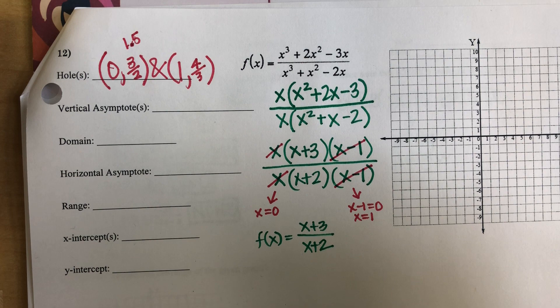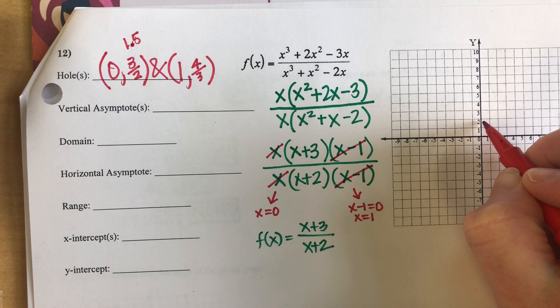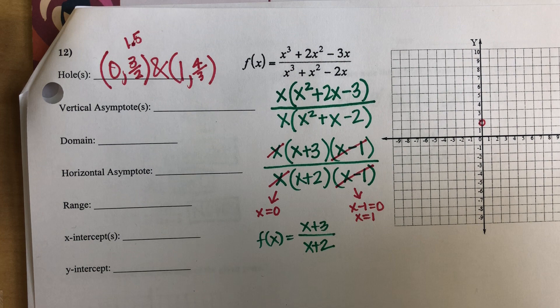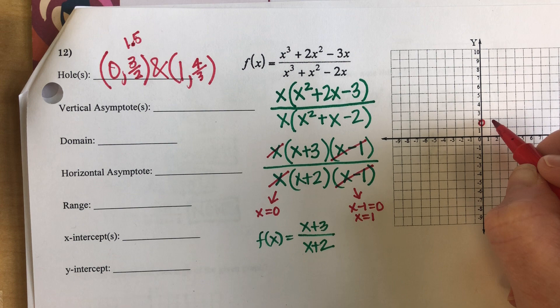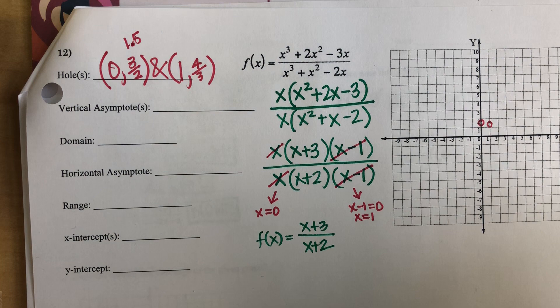I can come plot both of those over here on my coordinate plane. Zero, 1.5 — that happens to be on the Y axis. And then I also have 1, four thirds — that is about 1 and a third, so right about in there.